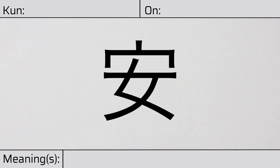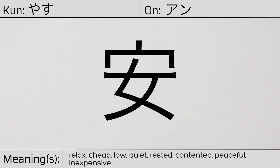Welcome to this lesson on Japanese kanji. Today, we'll be discussing this character. This kanji has a kunyomi or Japanese reading of yasu, and it has an onyomi or Chinese reading of an. This character has the meanings relax, cheap, low, quiet, rested, contented, peaceful, or inexpensive.